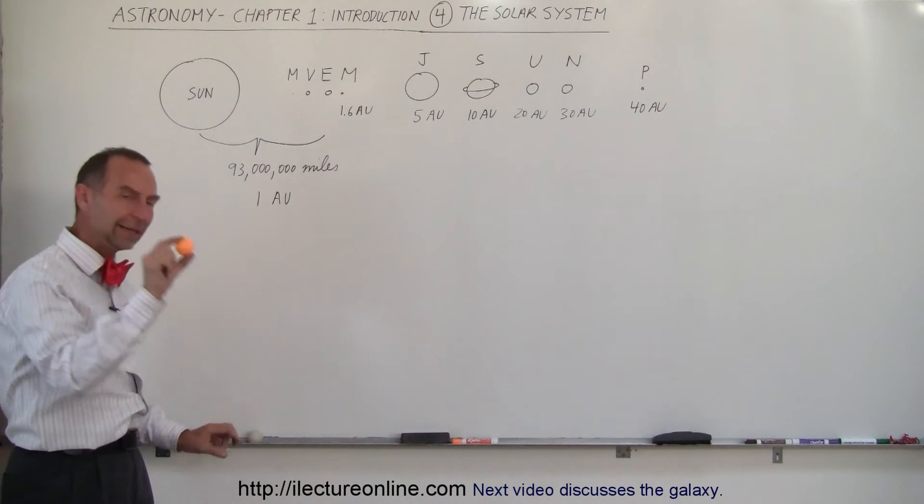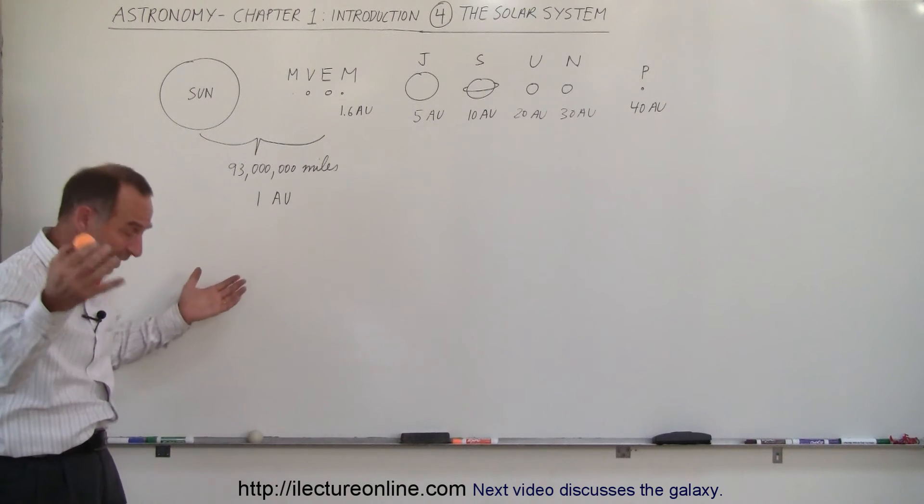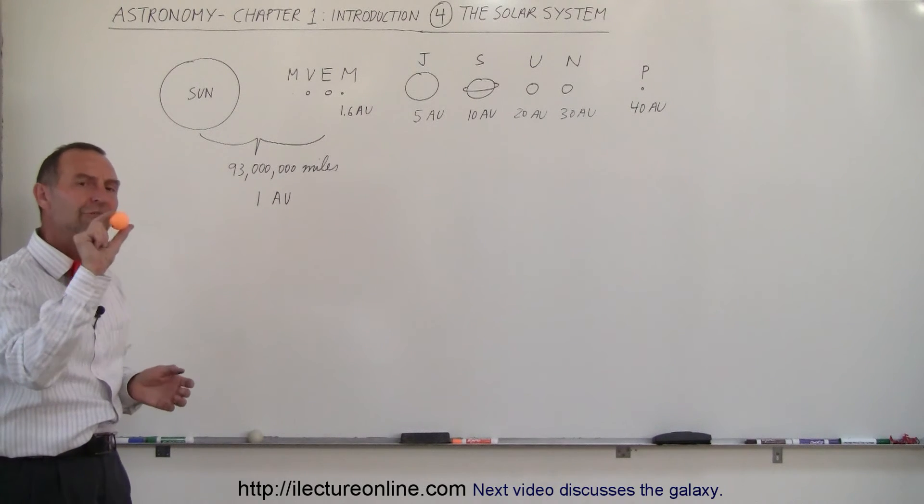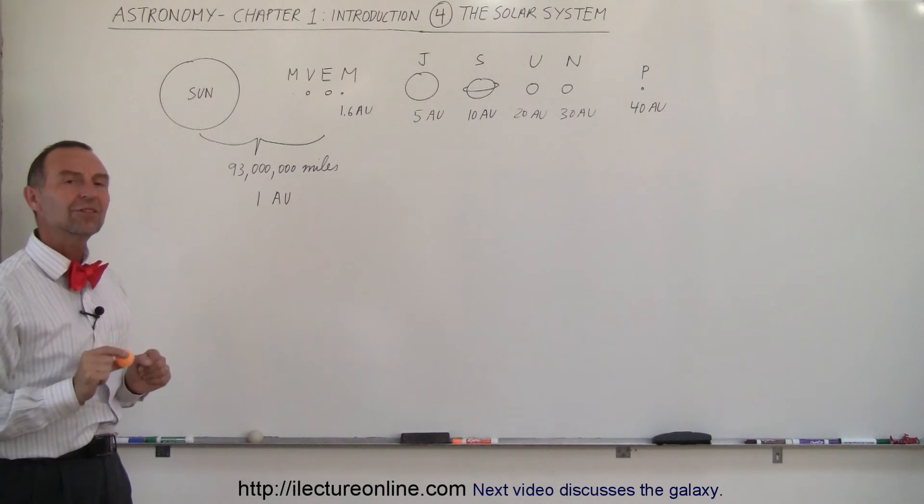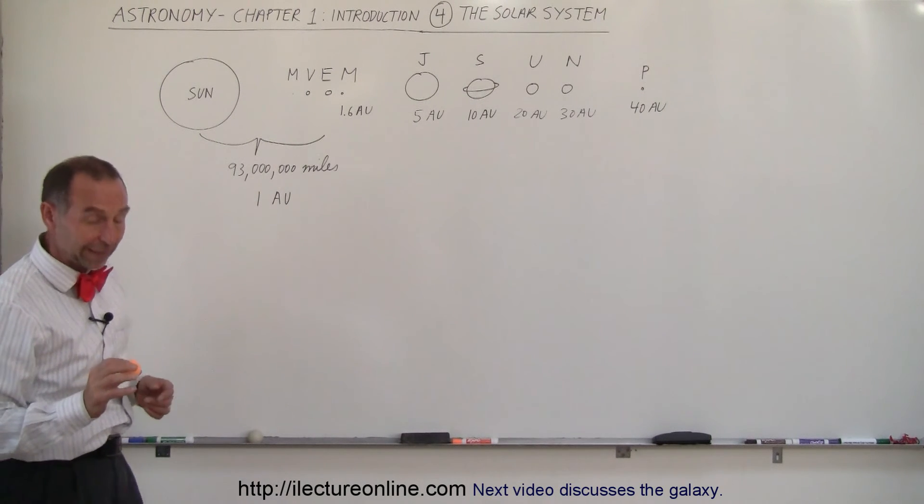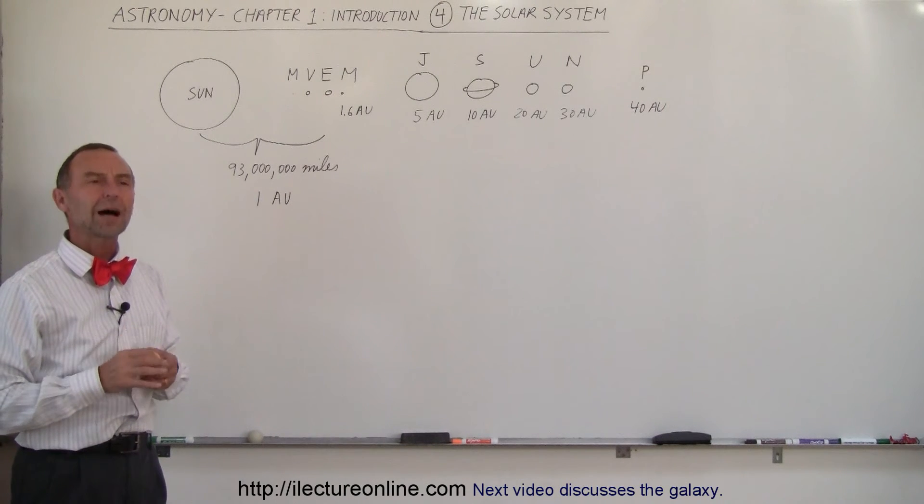How far away would we have to place this ping-pong ball at this size if the Universe was scaled down to this size, or the Sun, the Earth was a grain of sand, how far away would we have to go and place this ping-pong ball to simulate the distance between the Sun and the next nearest star? It turns out we would have to walk almost 1,000 miles.